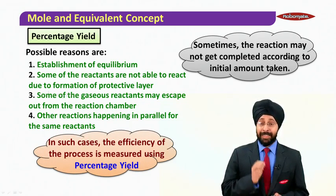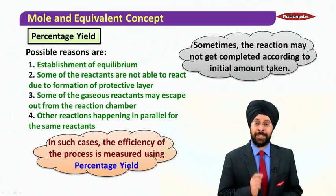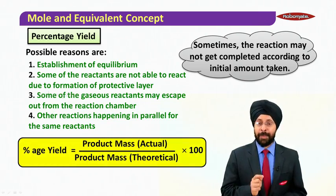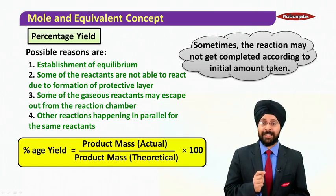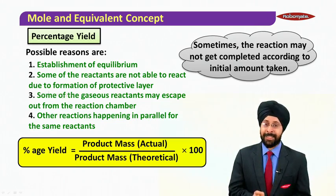Now in such cases, the efficiency of the process is measured using percentage yield. What is percentage yield? It is the product mass that you actually get divided by the product mass that you theoretically predict times 100.